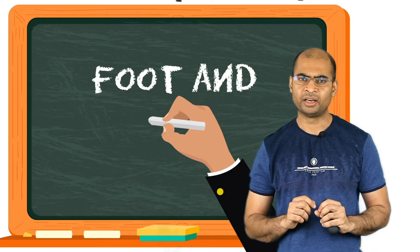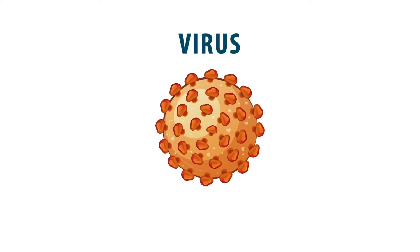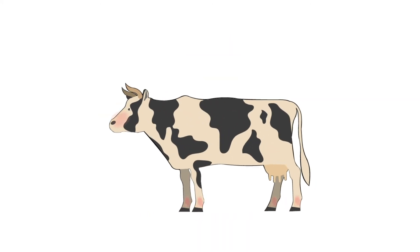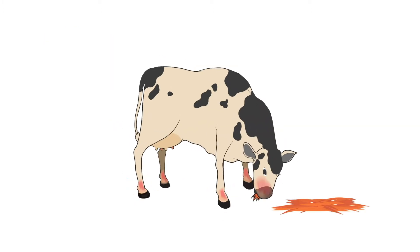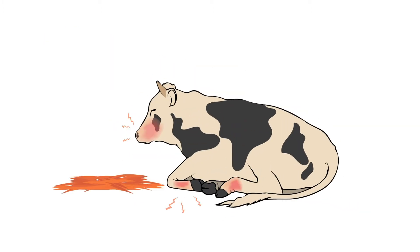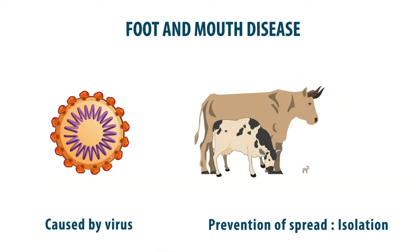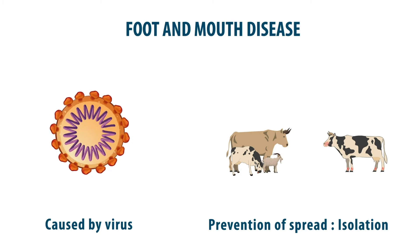Another disease in animals is called foot and mouth disease, which is caused by a virus. This is a very painful and highly contagious disease. It causes a lot of blisters in their mouth and feet, making it very hard for them to eat. As a result, they become weak. Unfortunately, there is no treatment or vaccine for this disease, so it is really important to isolate the affected animals immediately to prevent the spread.